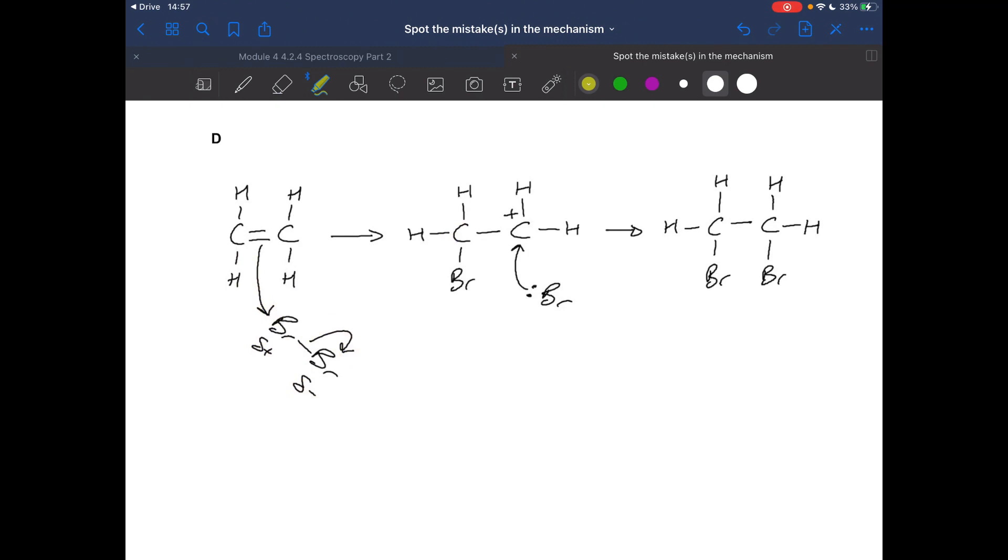Mechanism D, there's actually only one mistake in this one, and they've forgotten to put the charge for the bromide ion. So it should be Br minus, of course.